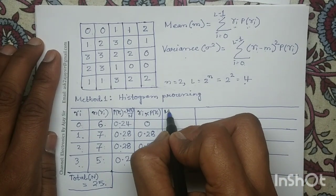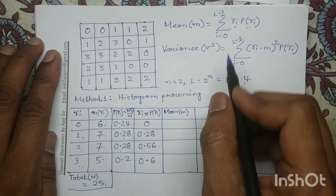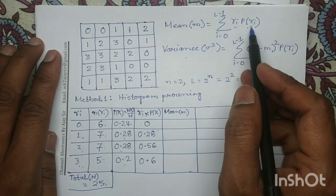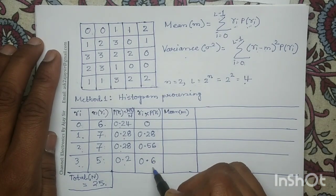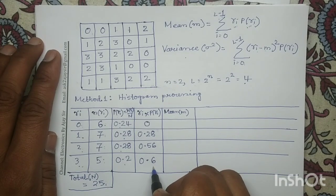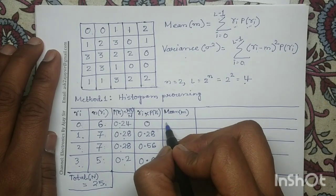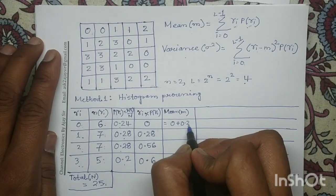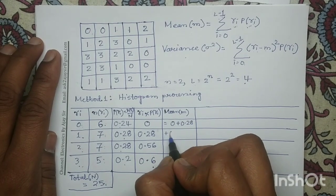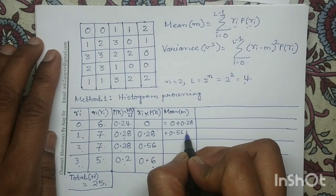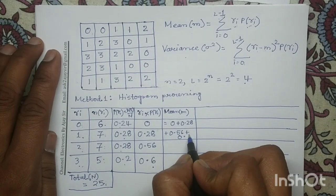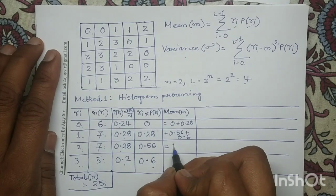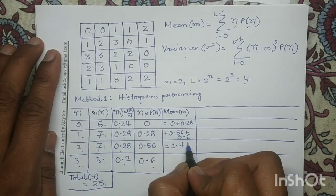Now in order to determine the mean, from the expression it is summation i equals 0 to L minus 1 of ri into p(ri). We have already determined ri into p(ri). Now we perform the summation — we add all these numbers: 0 plus 0.28 plus 0.56 plus 0.6. If we simplify this, it comes to 1.44.